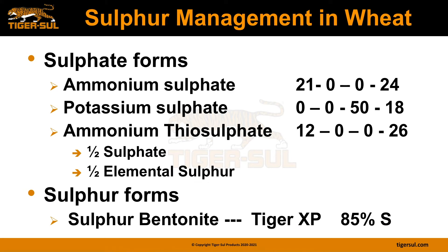To better understand how we utilize sulfur and the sulfur forms as we manage our nutrient management programs in wheat, first we have the sulfate forms. That includes ammonium sulfate, potassium sulfate, ammonium thiosulfate, as well as the elemental sulfur forms — sulfur bentonite such as our Tiger XP. Note that ammonium thiosulfate is composed of one-half sulfate and one-half elemental sulfur. The sulfate forms dissolve in soil moisture and can be readily available for plant uptake.